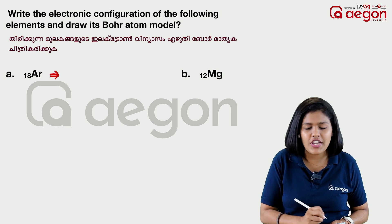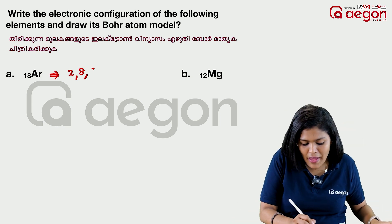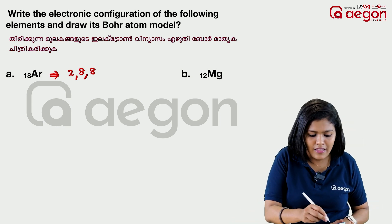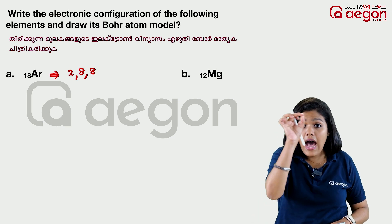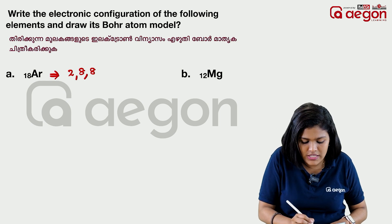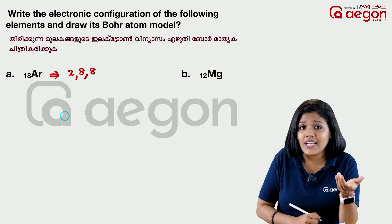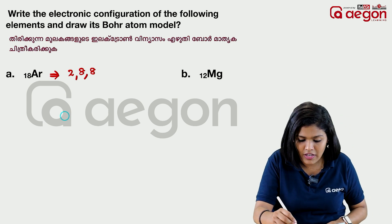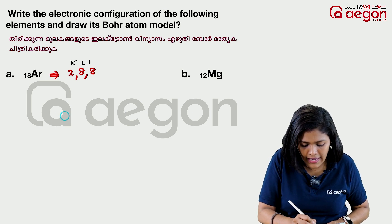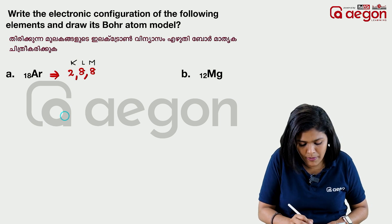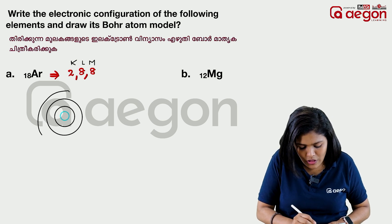With atomic number 17, the electronic configuration is: 2 electrons in the first shell, 8 electrons in the second shell, and 7 in the third shell. Now, let's look at the nucleus and the shells. We have K, L, M shells — three shells in total.